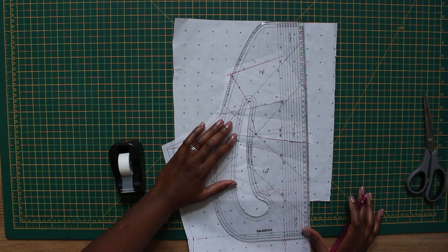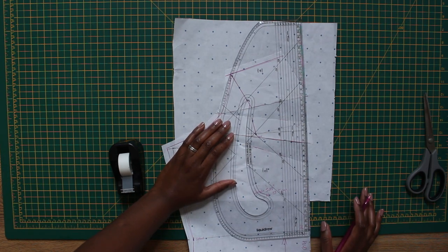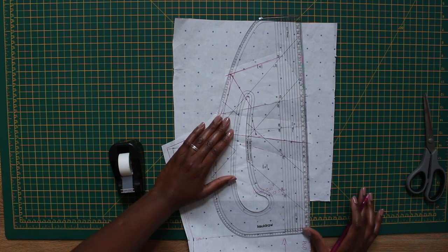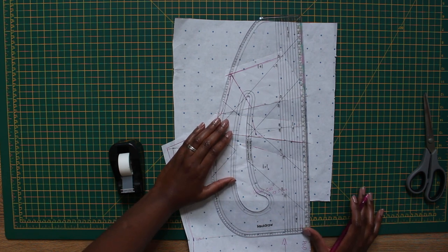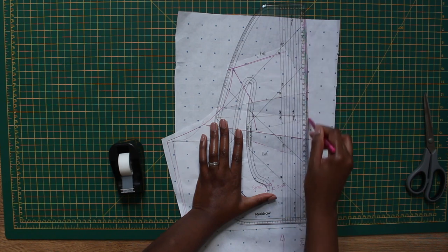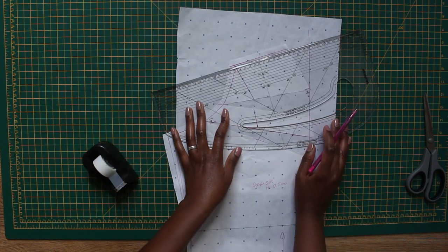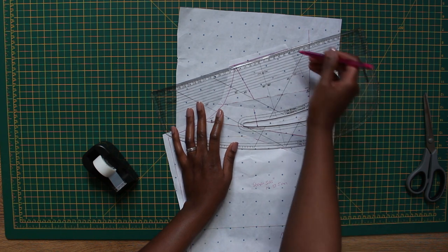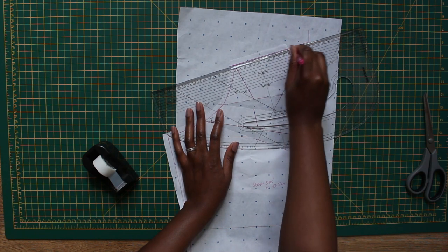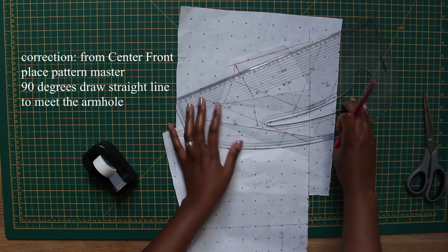Now you want to get your pattern master and basically put your pattern master on the center front line. Just a quick interruption - if you can place the pattern master 90 degrees on the center front line and just draw a straight line onto the armhole, basically square to the left.